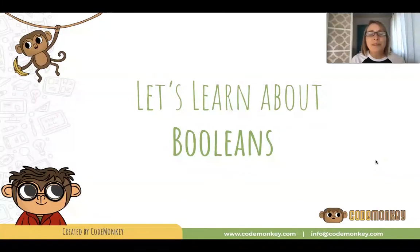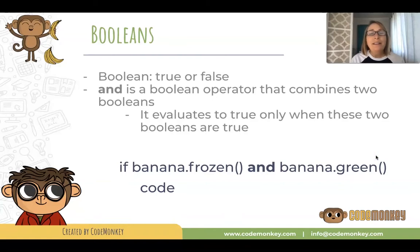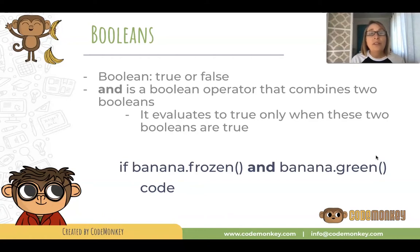Welcome to Boolean Opera. Let's learn about Booleans. Boolean is true or false, and AND is a Boolean operator that combines two Booleans. It evaluates to true only when both of these two Booleans are true.